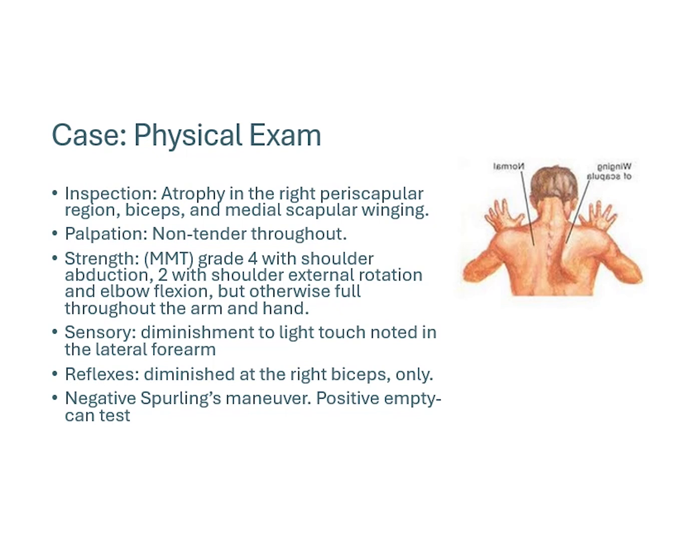On sensory testing, there was a diminishment of light touch just in the lateral forearm; elsewhere he had normal sensation throughout the hand. On reflex testing, it was slightly diminished at the biceps, but elsewhere equal to the contralateral side. Negative Spurling's test; he did have a positive empty can test, which may suggest some supraspinatus impingement.